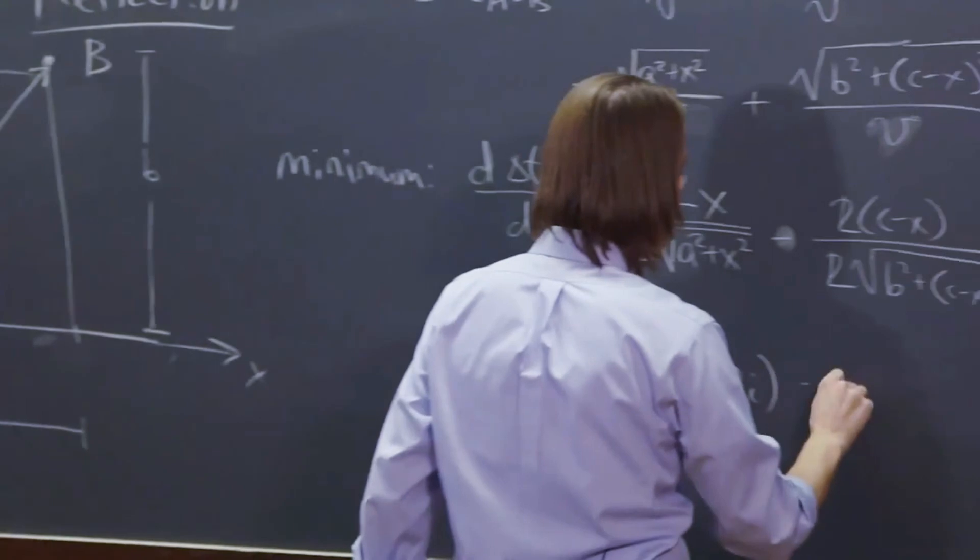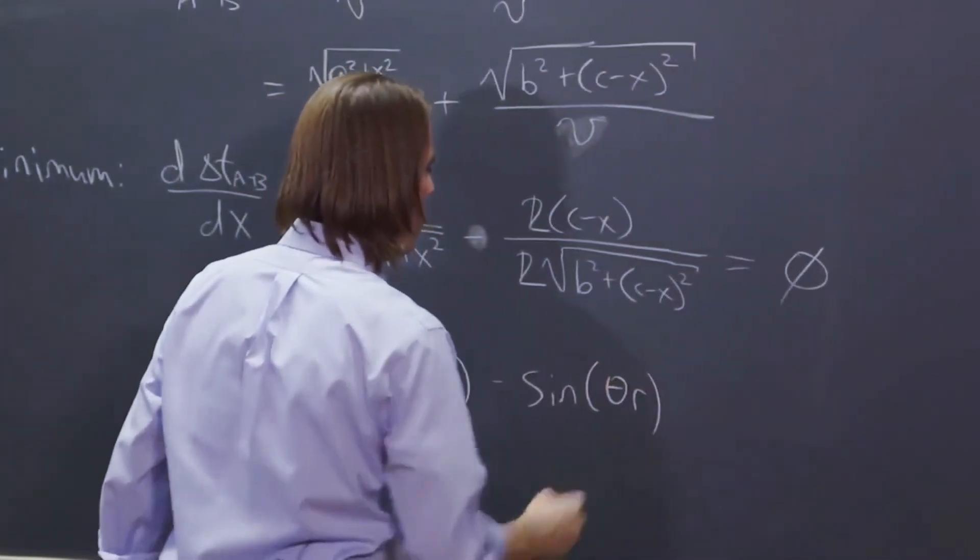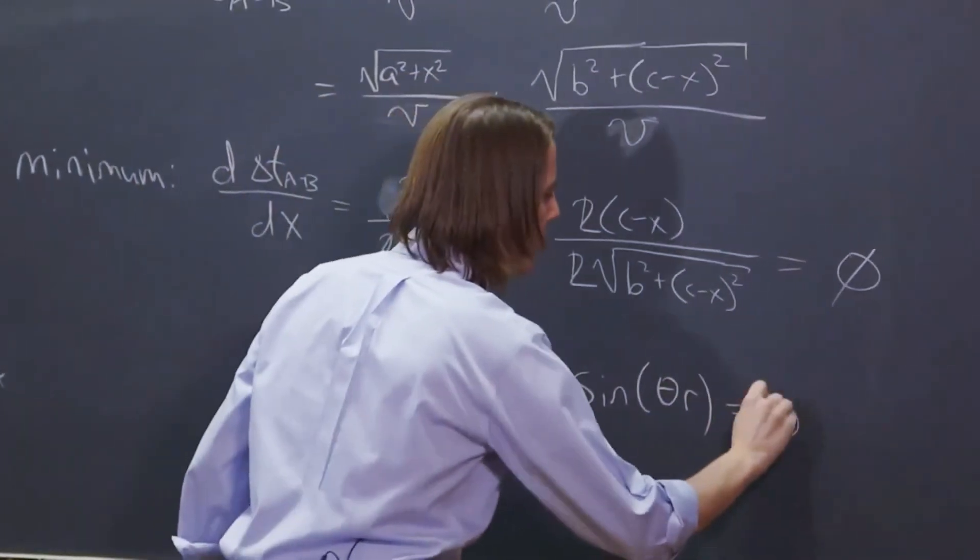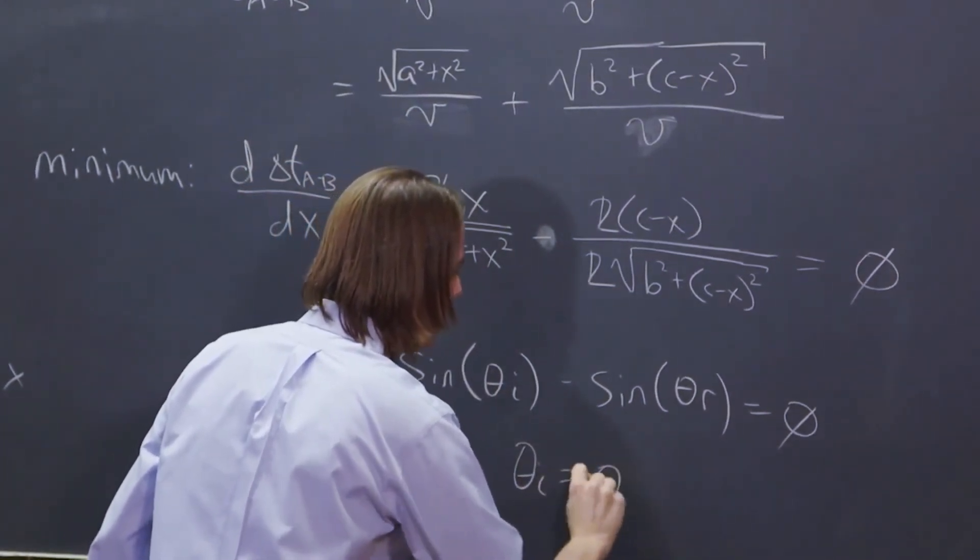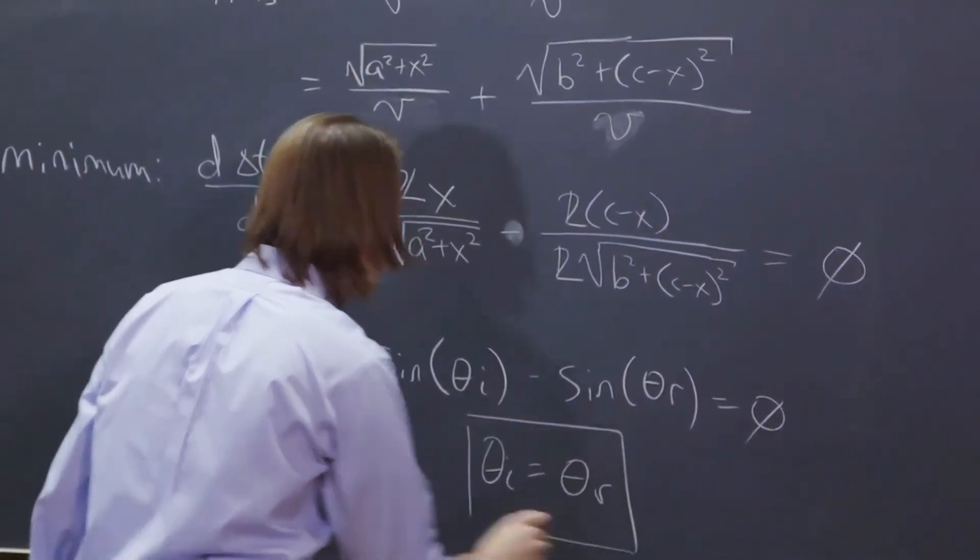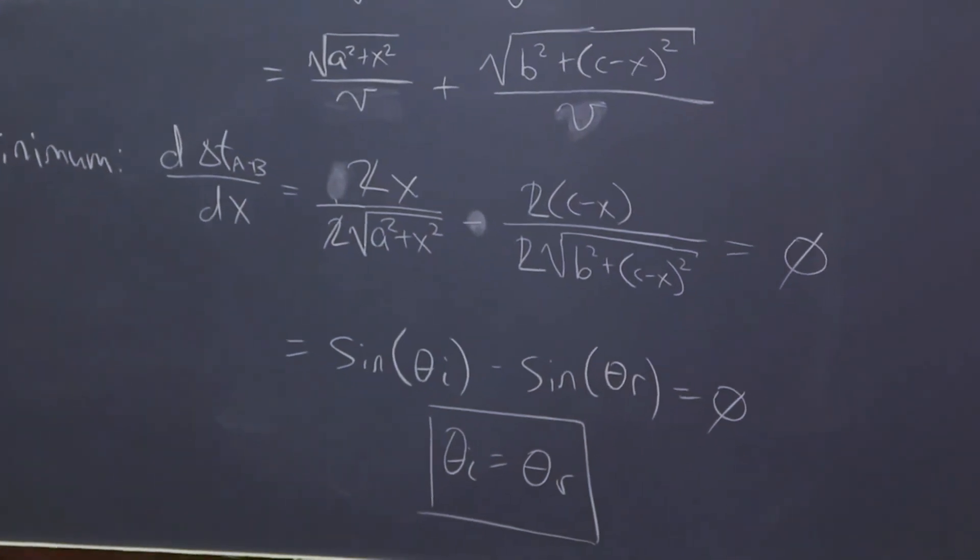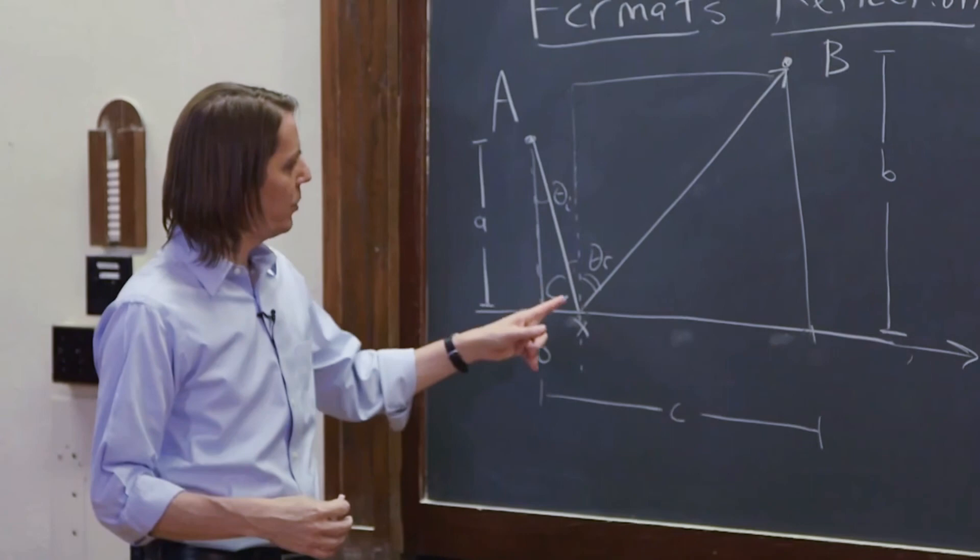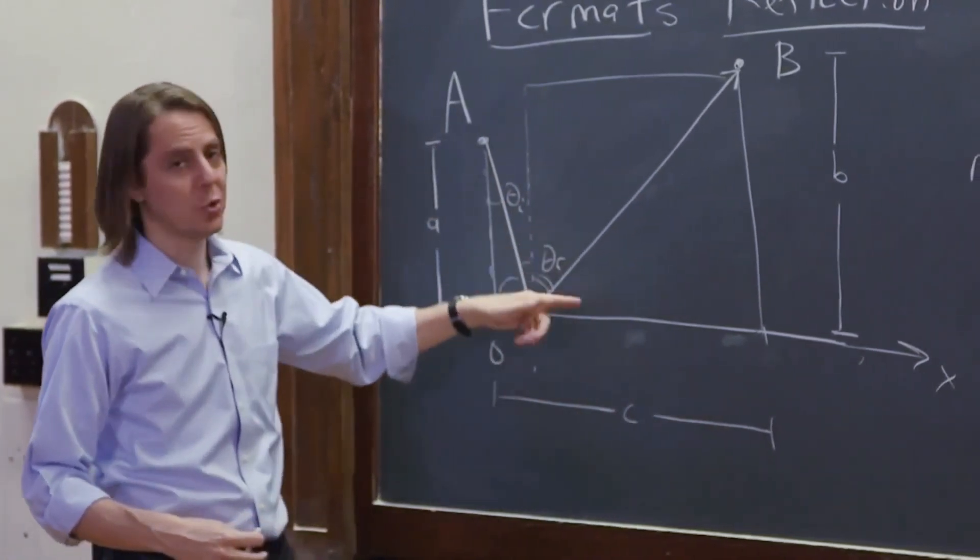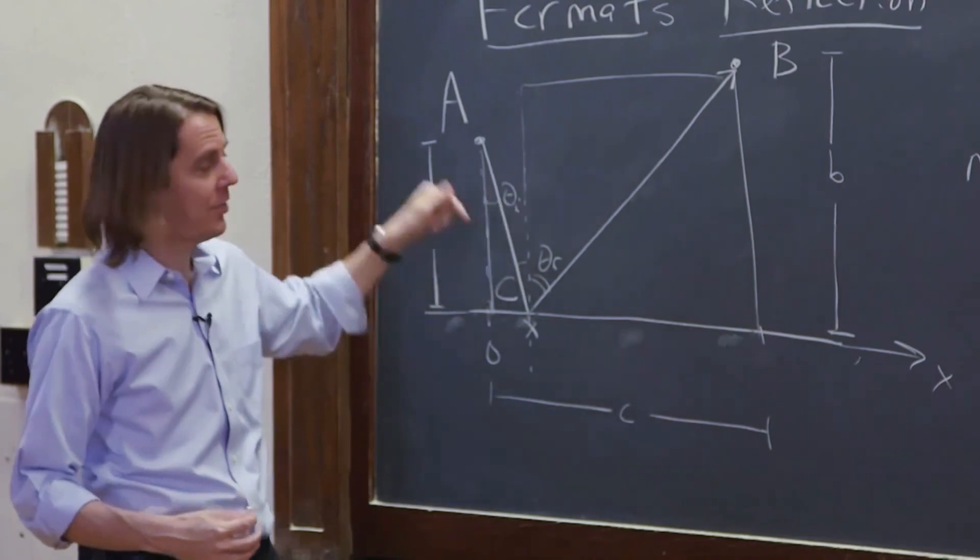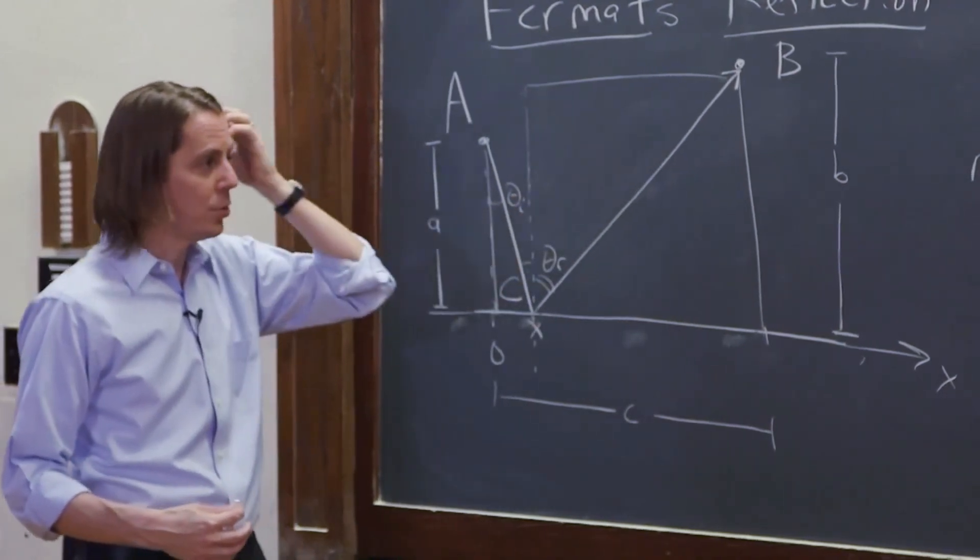So minus the sine of theta R and those equals zero. And one way that's true is theta I equals theta R. So you can see that one way to think about it, one way to get the law of reflection is to say when it comes in that angle of incidence equals angle of reflection, that's actually the shortest path. The shortest path will get to you there in the shortest time.